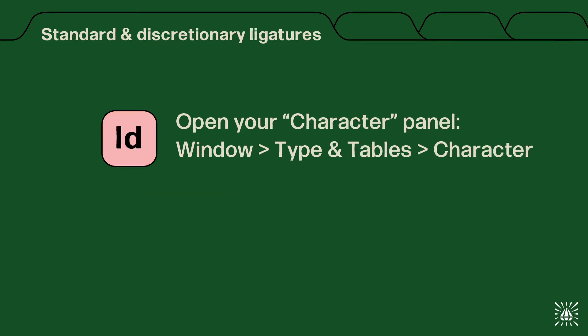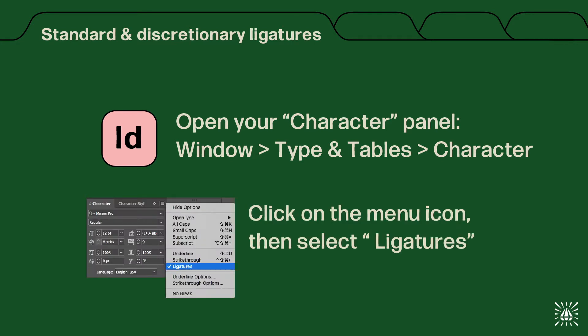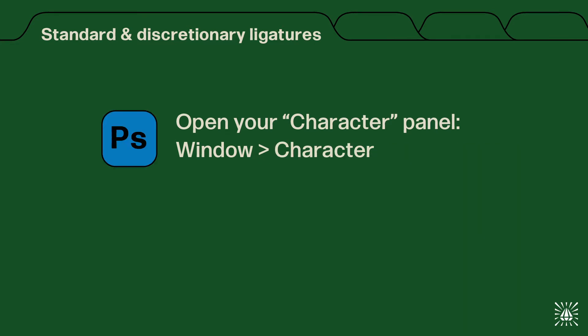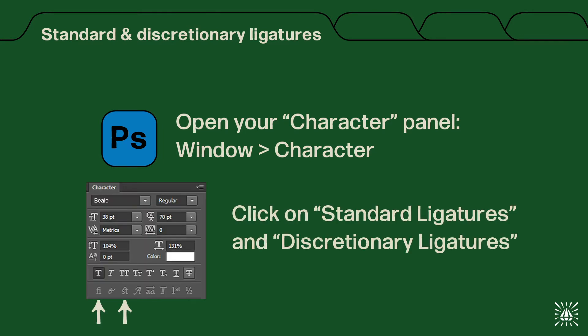In InDesign, open your character panel by going to Window, Type and Tables, Character, then on the menu icon select Ligatures. In Photoshop, open your character panel by going to Window, Character, then click on the standard and discretionary ligature icons at the bottom.